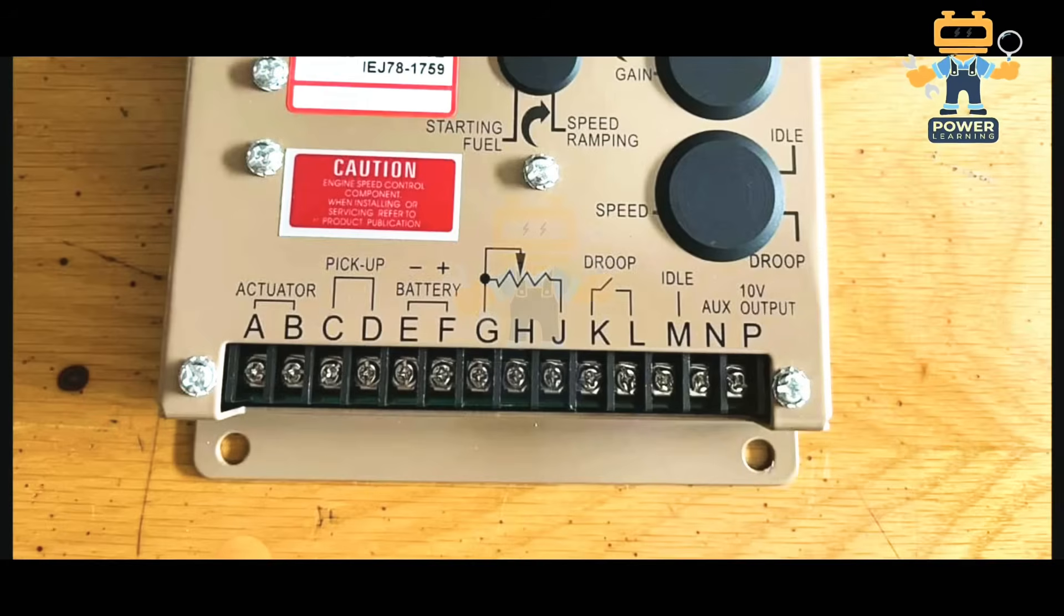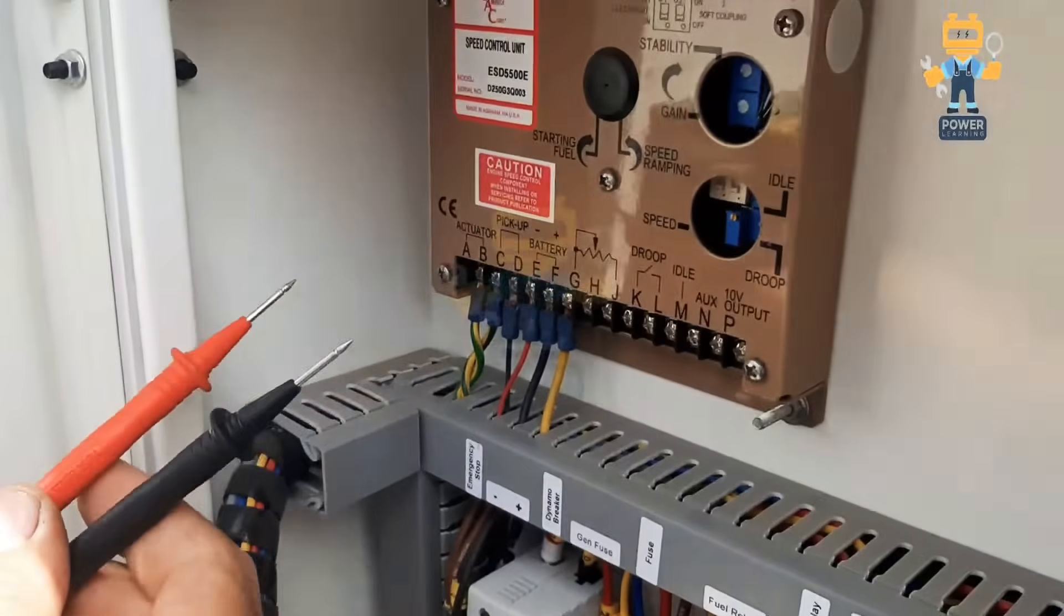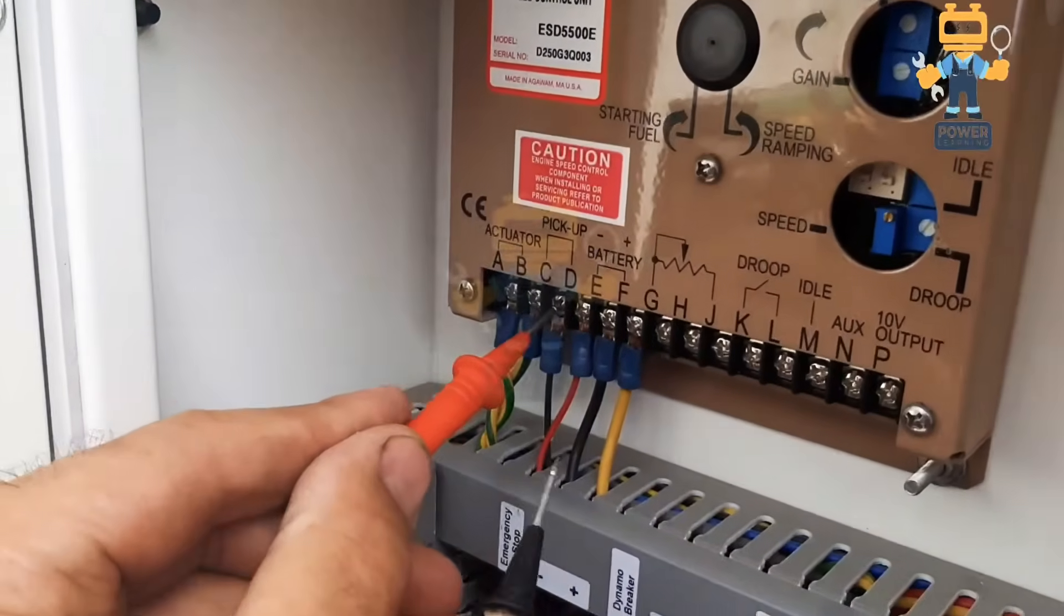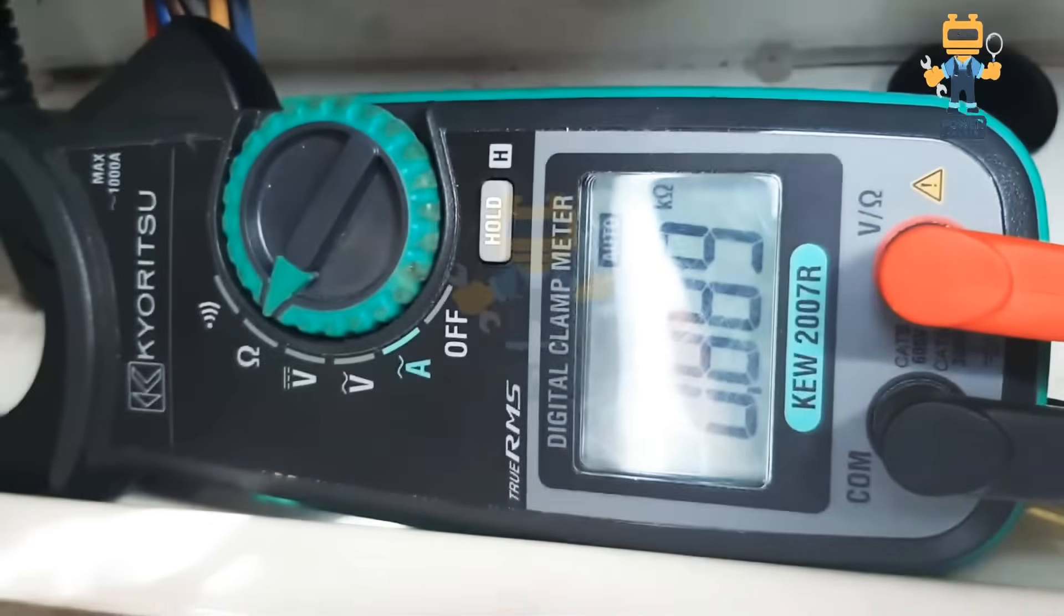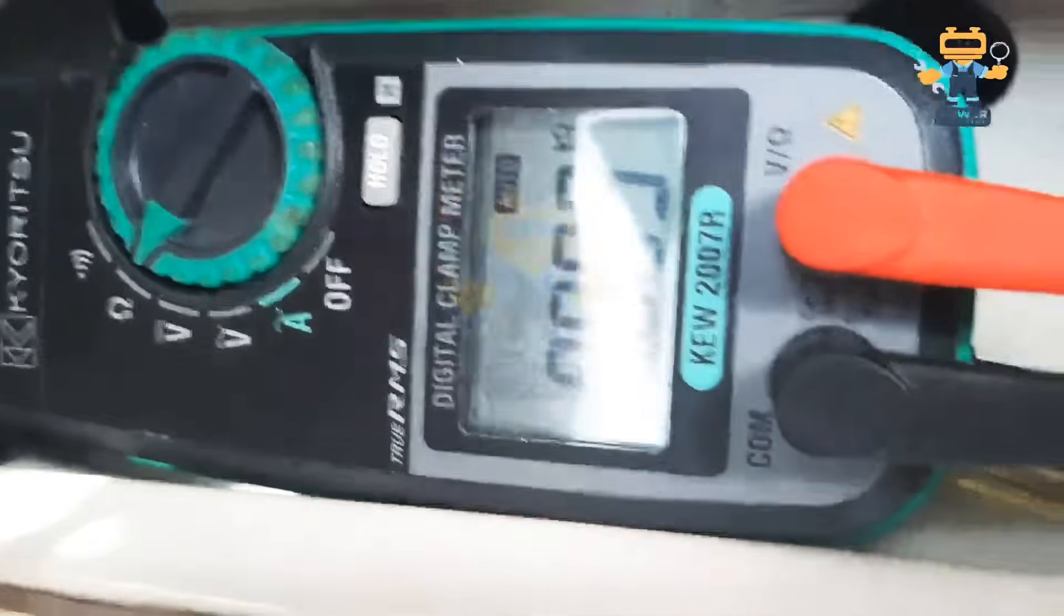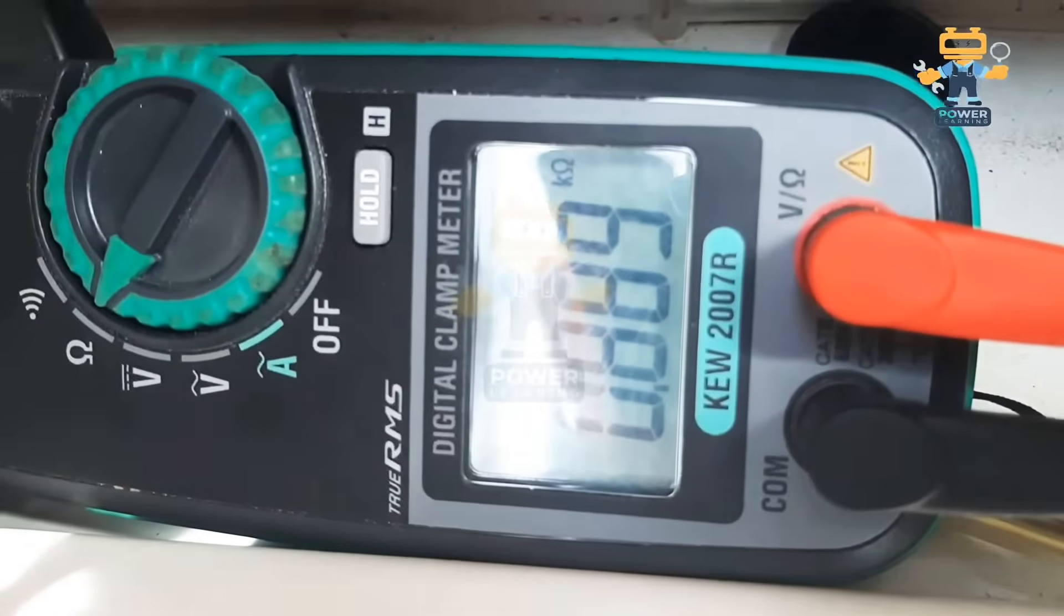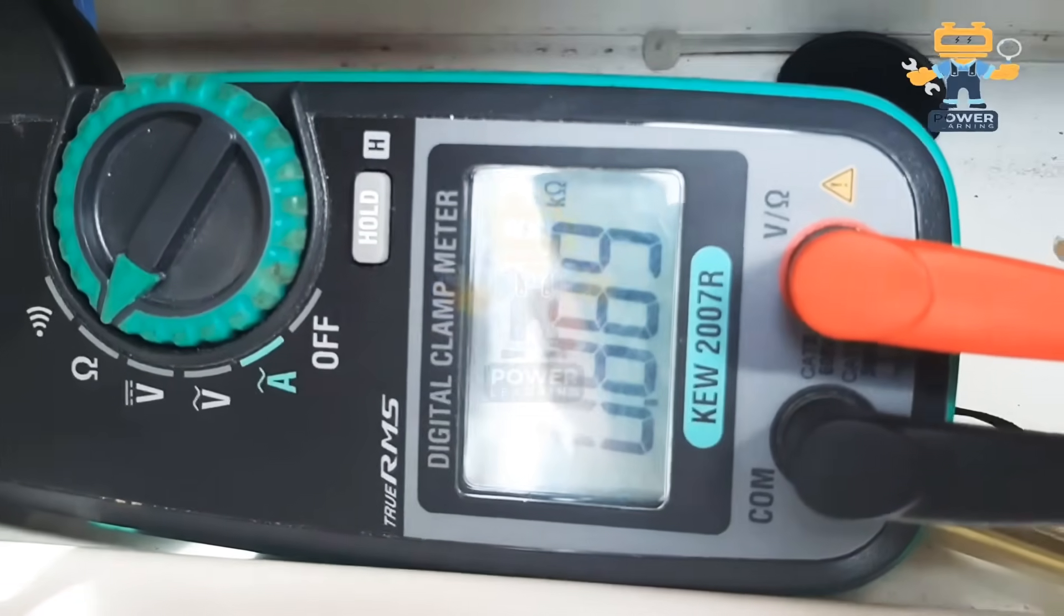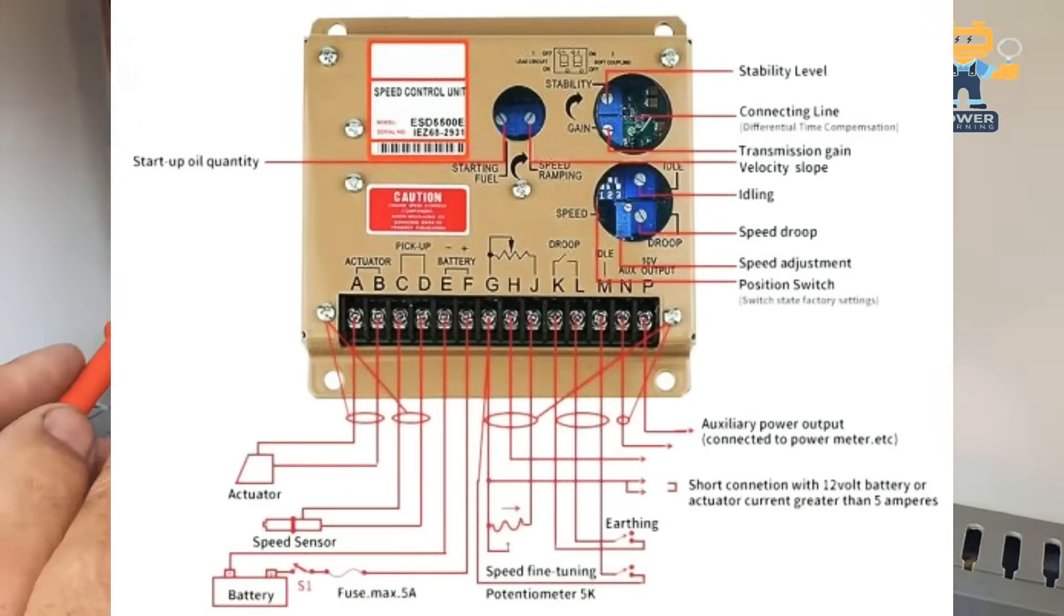While the engine is cranking or running, this MPU is giving AC volt signal to this controller. So this is an input of this controller - magnetic pickup giving AC volt signal to this controller during starting and during running of the generator. After getting this signal at the pickup point, the controller receives this as an analog input, AC voltage coming here.